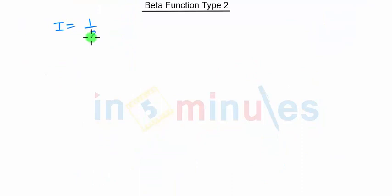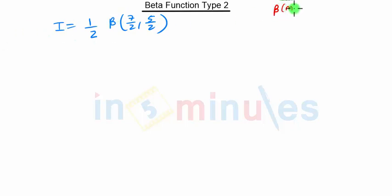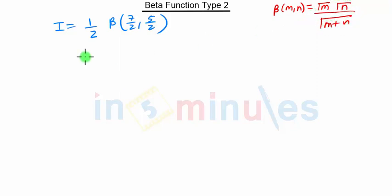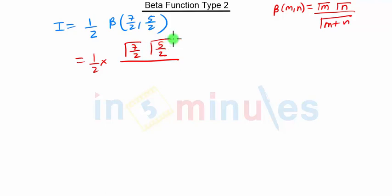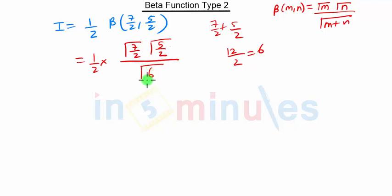So our I becomes 1 upon 2 into beta of 7 by 2 comma 5 by 2. We are going to use the relation between beta and gamma functions: beta of m comma n is nothing but gamma of m into gamma of n upon gamma of m plus n. So this becomes half into gamma of 7 by 2 into gamma of 5 by 2 upon gamma of 6, since 7 by 2 plus 5 by 2 is 12 by 2 which is 6.